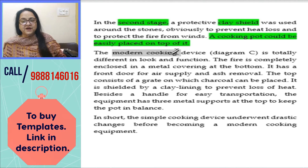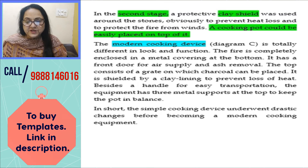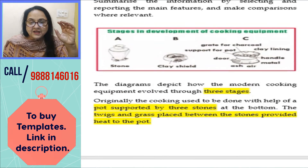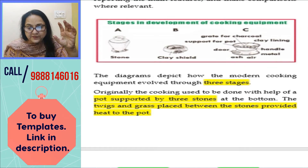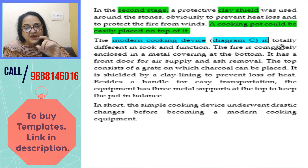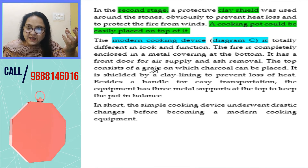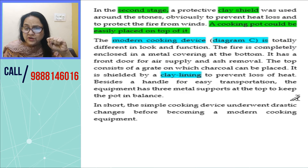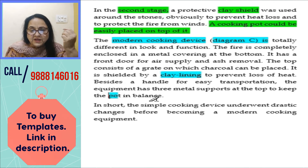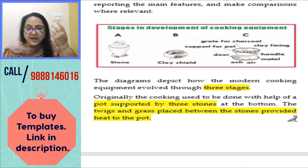Now, the modern cooking device, Diagram C, is totally different in look and function. The first diagram was a simple pot, the second was different, and the third diagram is entirely different. Diagram C has an ash chamber, metal, a handle, clay lining, a grate for charcoal, support stands for the pot, and a door through which air will pass to maintain the fire for cooking.